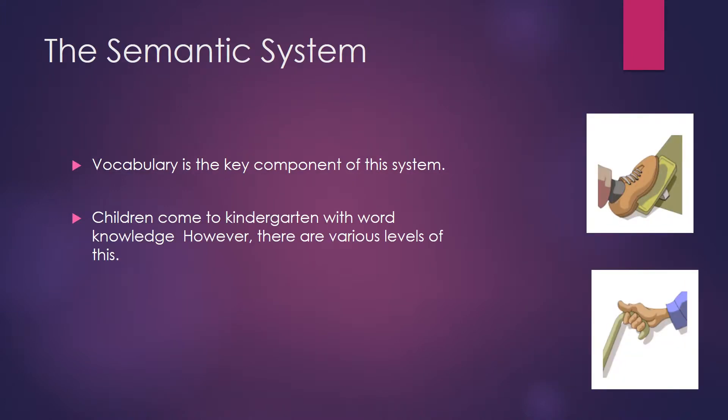The semantic system is the meaning system, and vocabulary is the key component of this system. Unfortunately, we might think that all kindergartners start with the same amount of vocabulary and understanding, but they don't. There are various levels depending upon their background knowledge and how much exposure they've had in the area of emergent literacy.